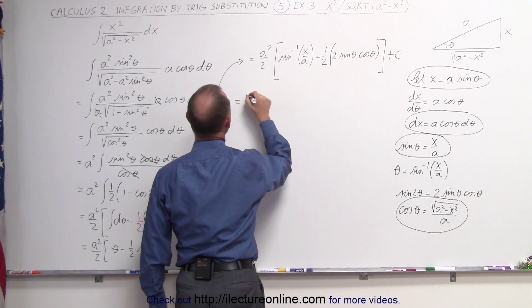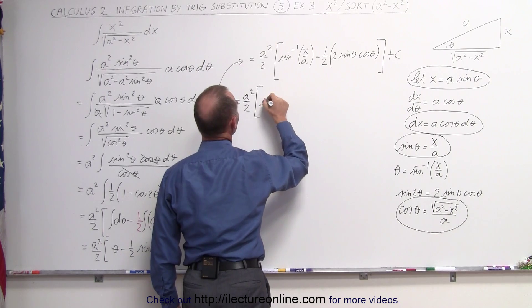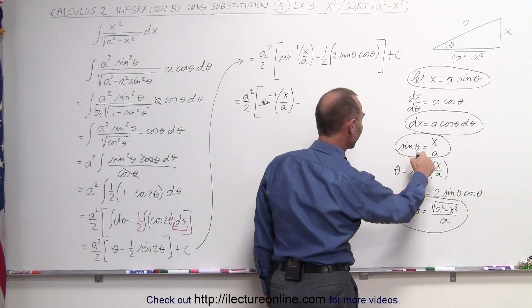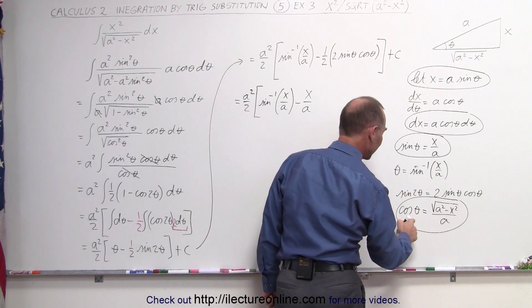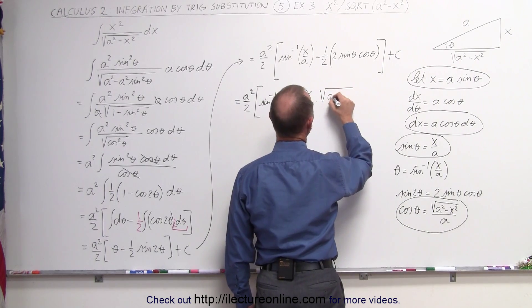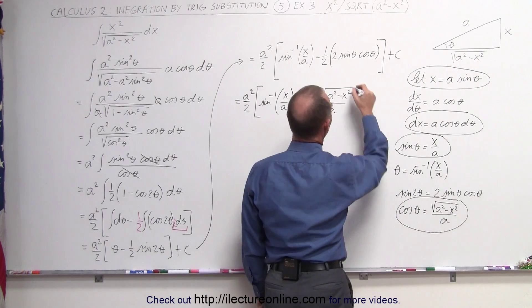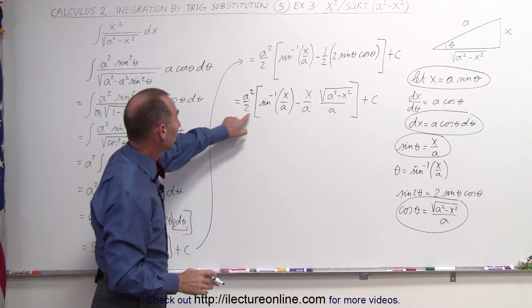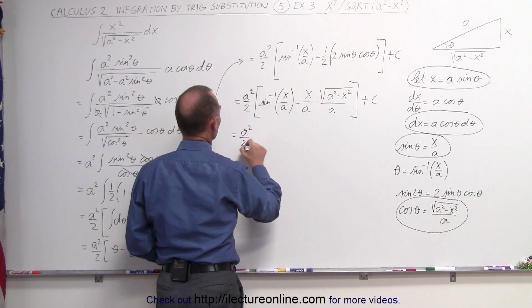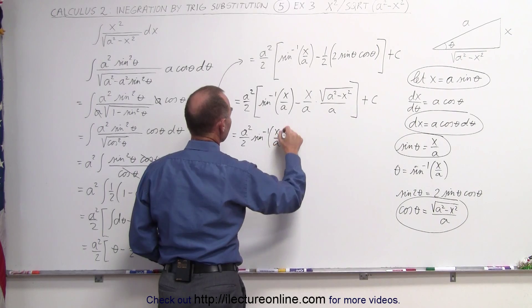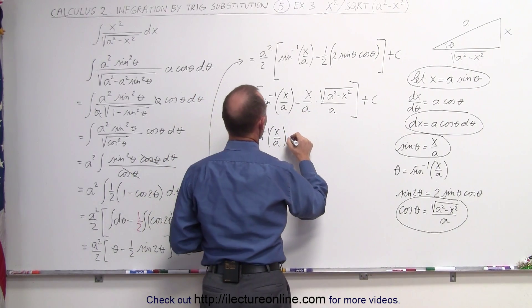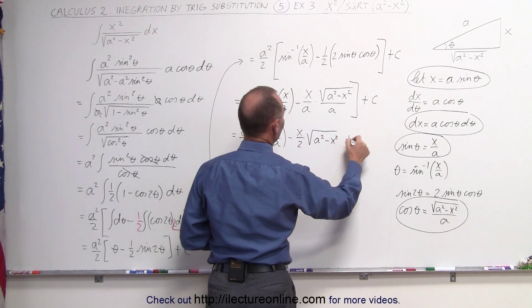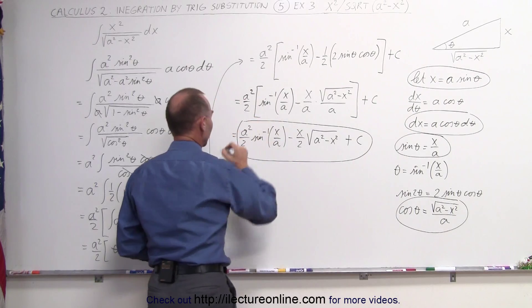Plugging those in: a squared divided by 2 times the arcsine of x over a. The one half cancels with the 2, leaving minus sine of theta times cosine of theta, which is (x/a) times (√(a²−x²)/a). The a squared cancels, and we end up with a squared over 2 times the arcsine of x over a, minus x over 2 times the square root of a squared minus x squared, plus a constant of integration. That's the best way to express the answer.